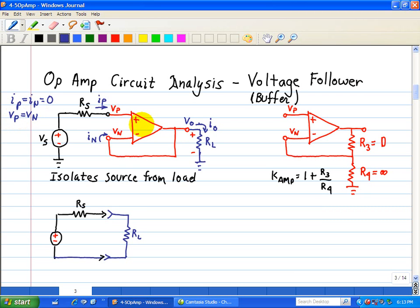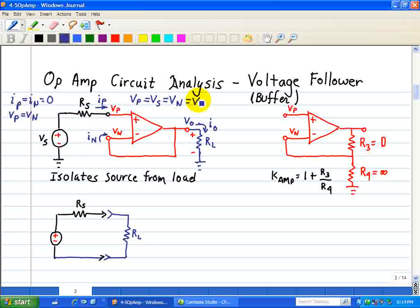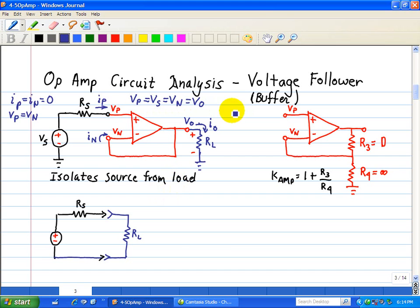Now using these two equations, we can find the relationship between VS and VO. Because there's no voltage drop across the source resistor, we can say that VP is equal to VS. But VP is equal to VN. And what is VN connected to? It's connected to VO. So the relationship is that VO is equal to VS.